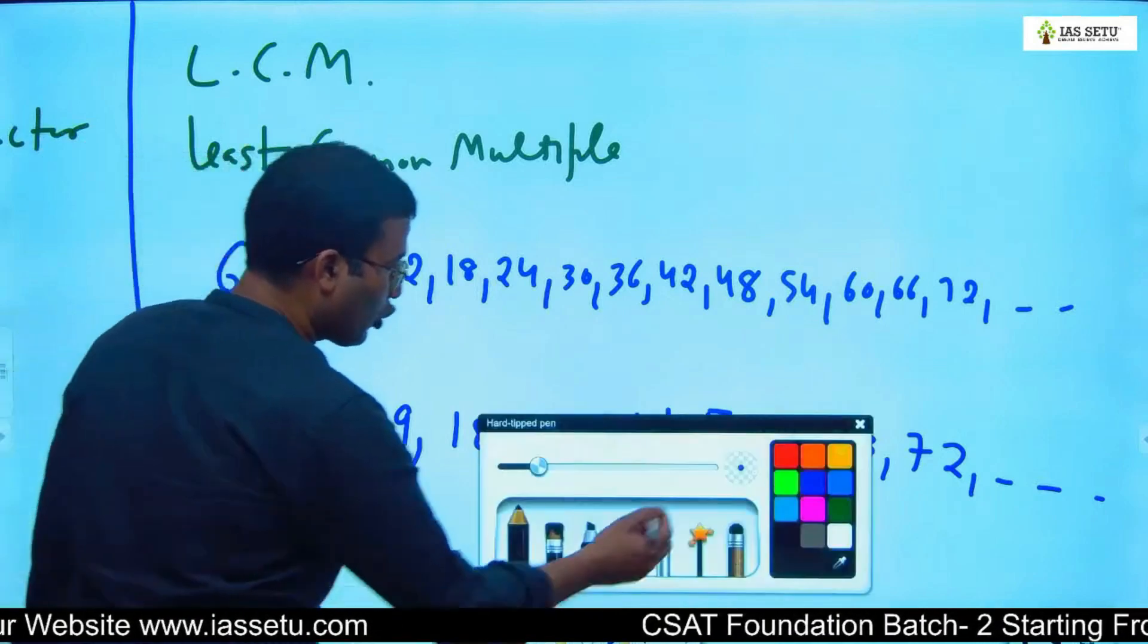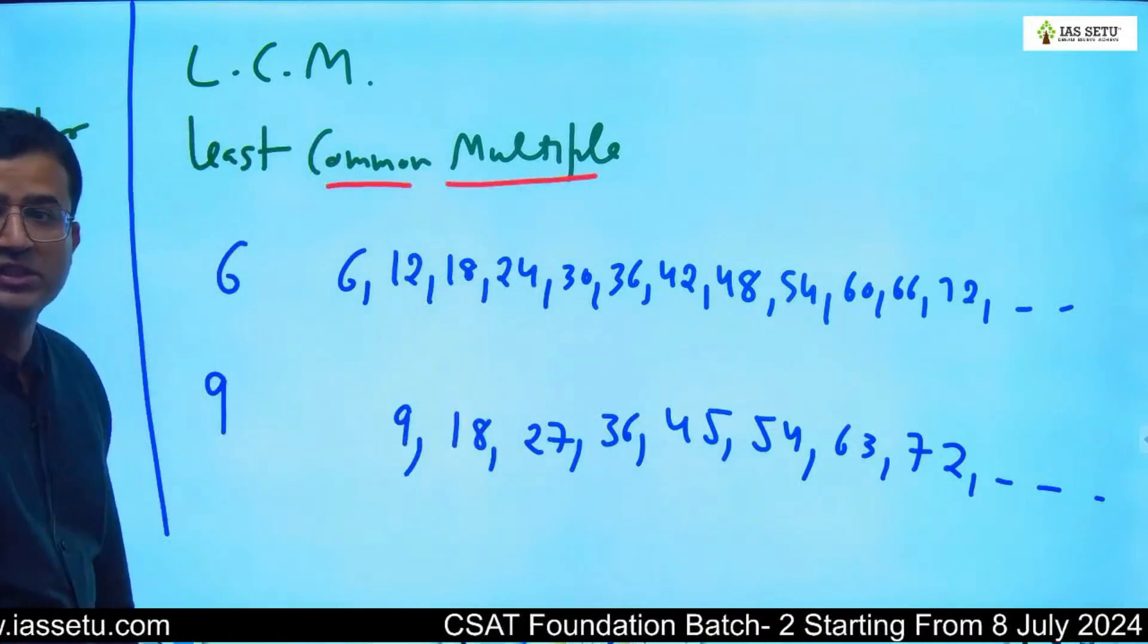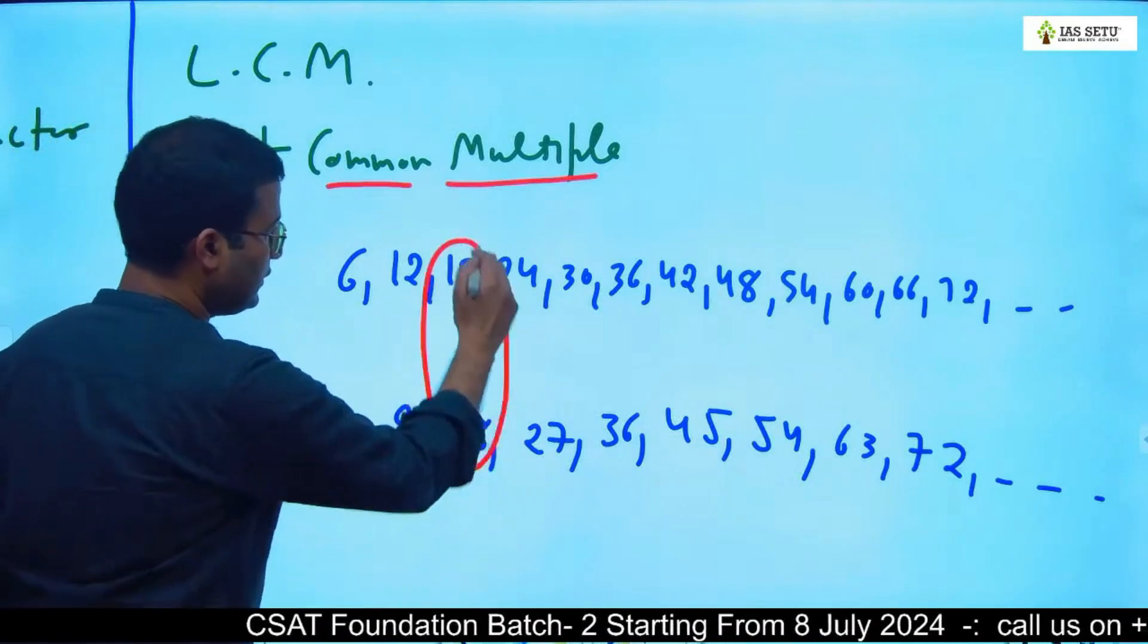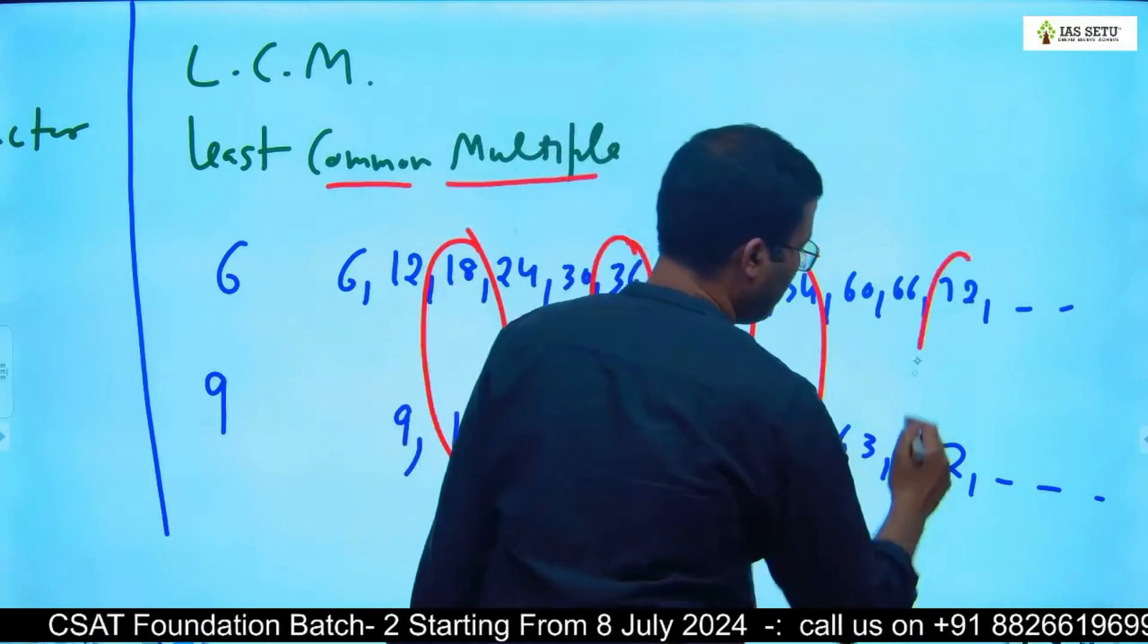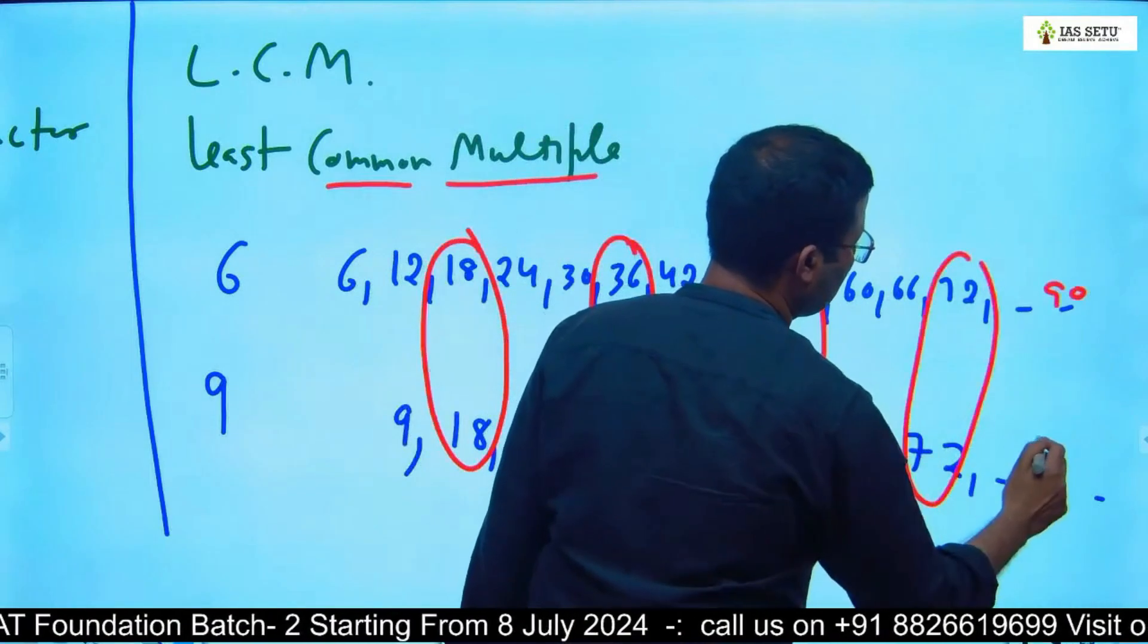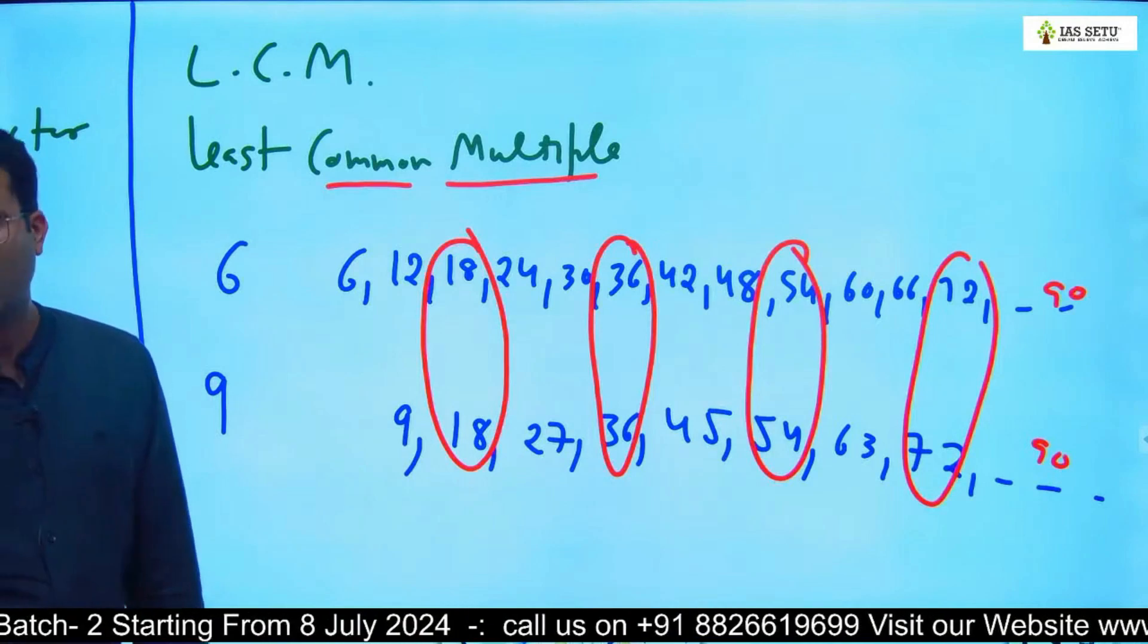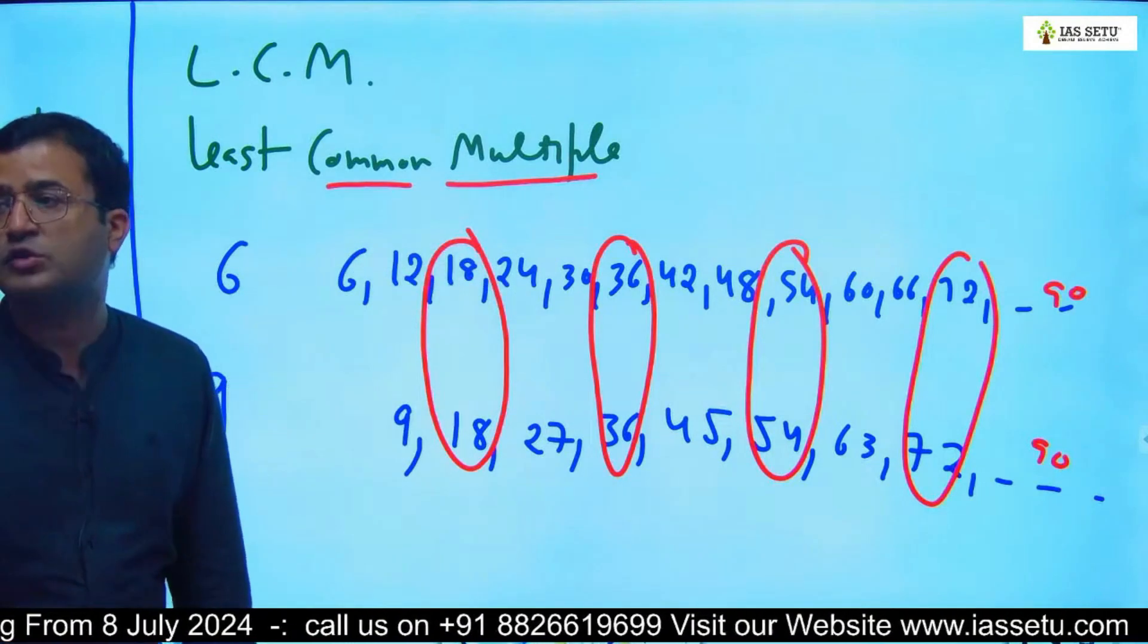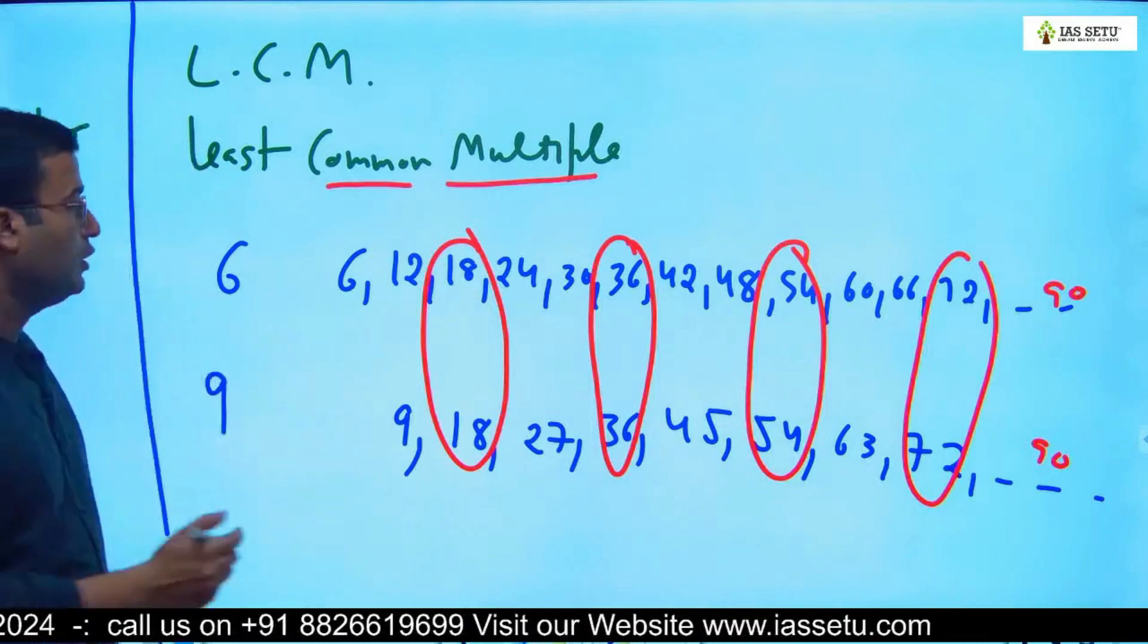Now, what is the word here? Common multiple. Out of these multiples, the common multiples - what are common multiples? 18, 36, 54, 72. This 18...